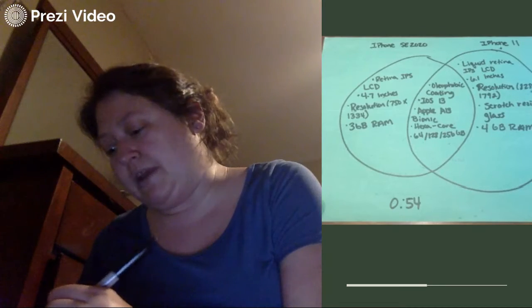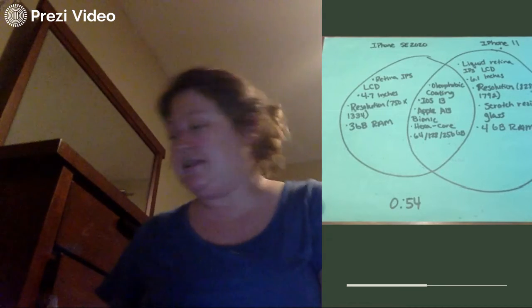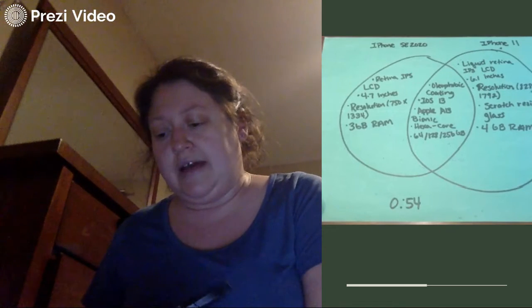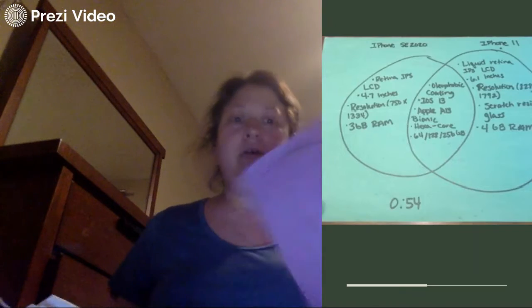iPhone SE 2020 is going to go on the first side, and the opposite side is going to go iPhone 11, just like what I have up there. You can set it up before you get going. The things that are the same are going to go in the middle.